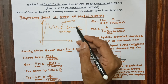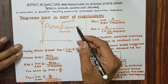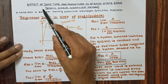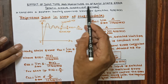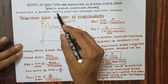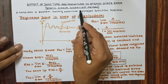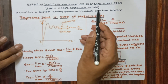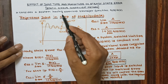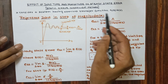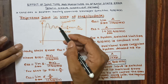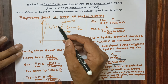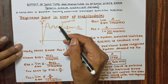Hello friends, welcome to ASTutorials. Today we are going to discuss the effect of input type and magnitude on steady state error, that is static error coefficient methods. Consider a system having open loop transfer function G(s) into H(s). In this we are going to consider three signals: step, ramp, and parabolic signal.